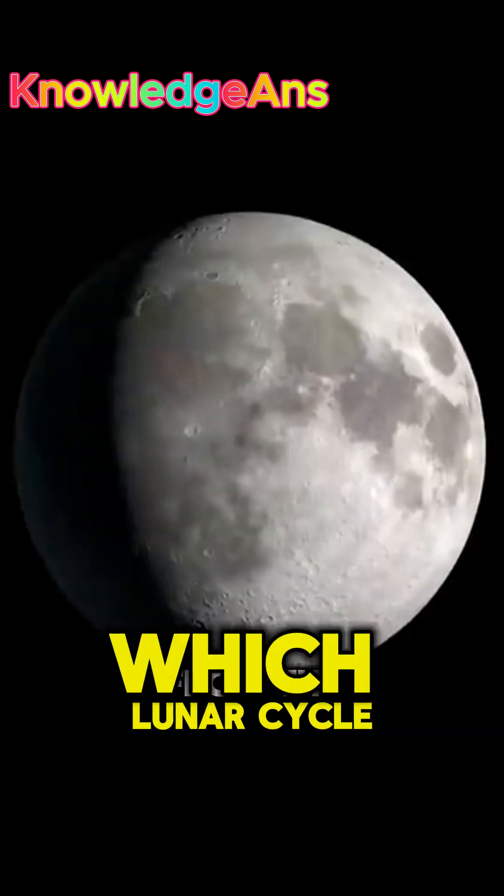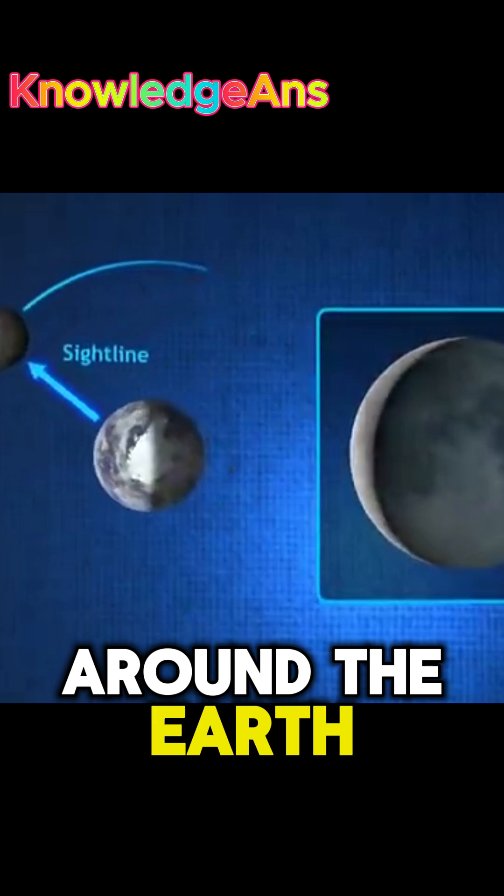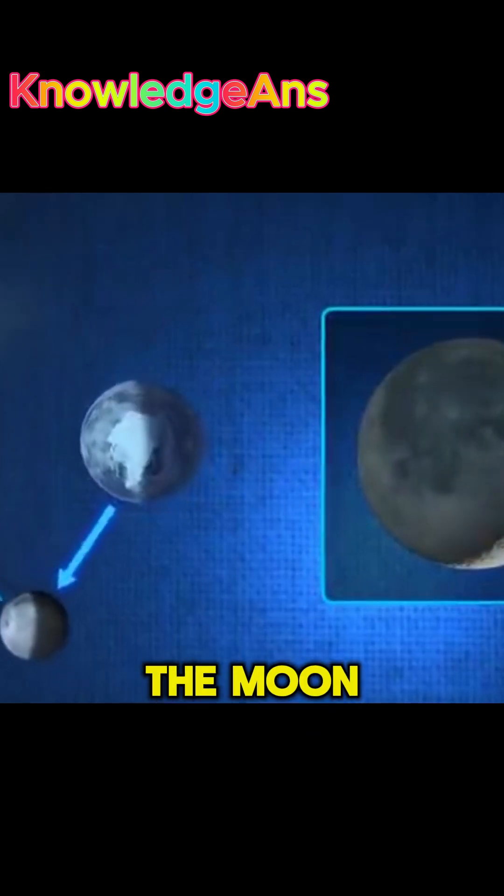A lunar eclipse differs from the lunar cycle, which occurs once a month. It depends on the presence of the Moon in its orbit around the Earth. The phases of the Moon appearing facing the Earth are called phases.